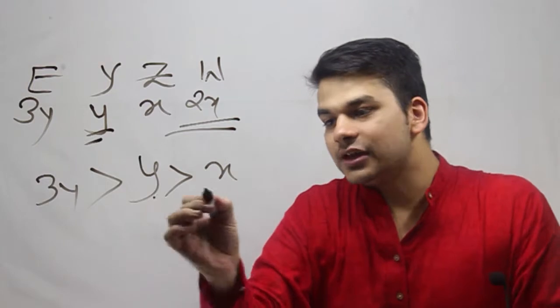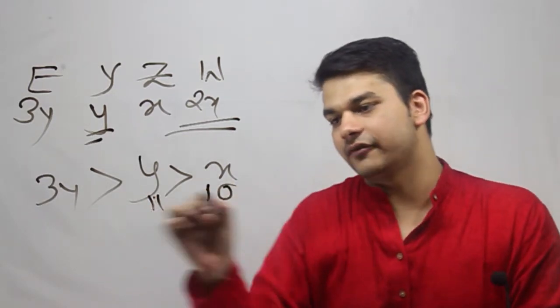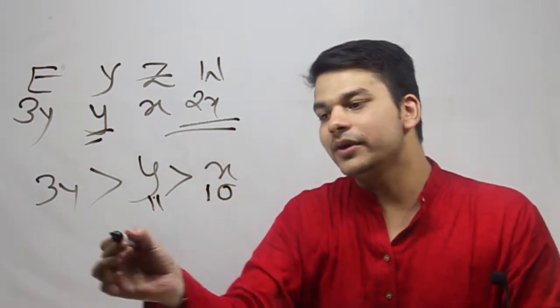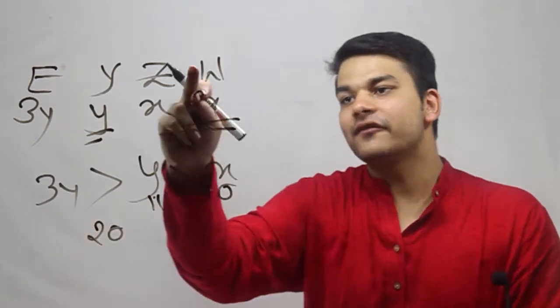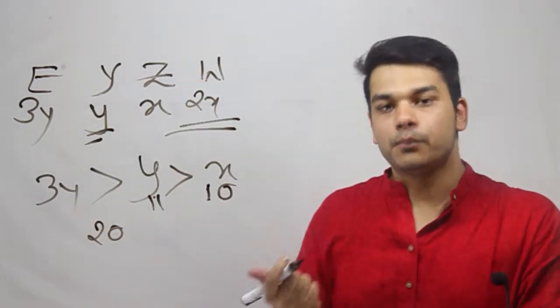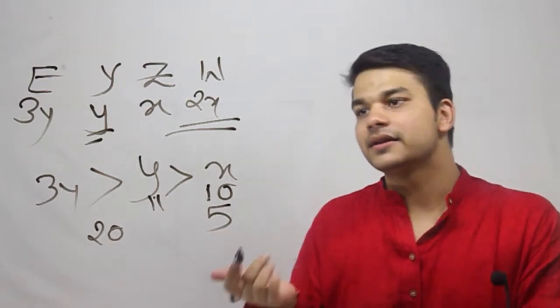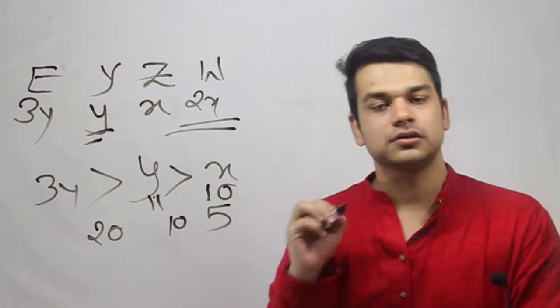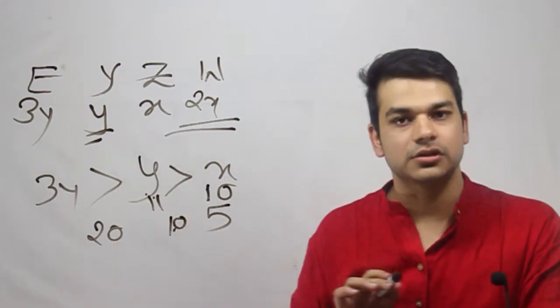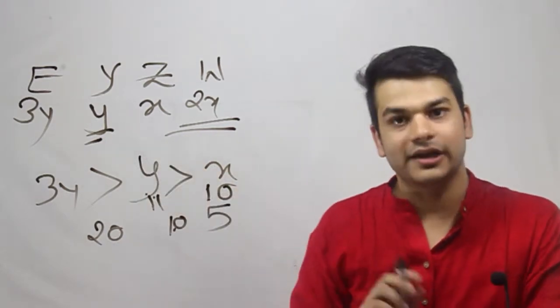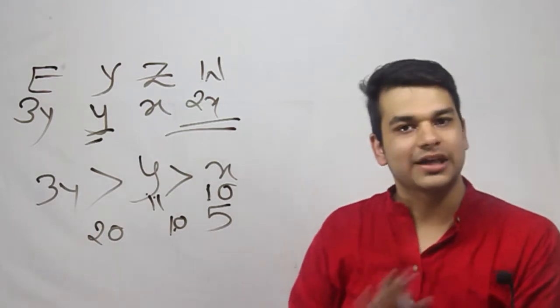If these values are close, that is if I take this as 10, this as 11, then 2x will be 20. So Vahida will be older than Yukesh. But if I take the value of x as 5 and y as 11, then Vahida's age will be 10 years, which will be less than Yukesh. So this option cannot be inferred.